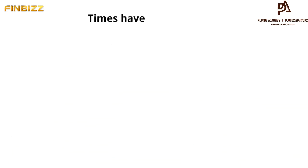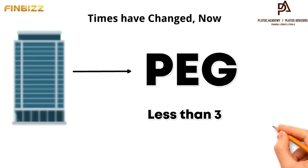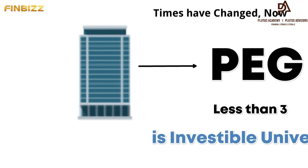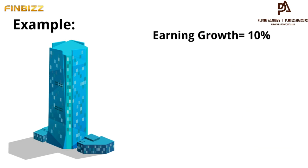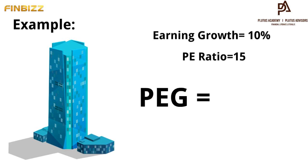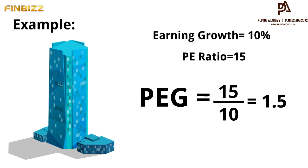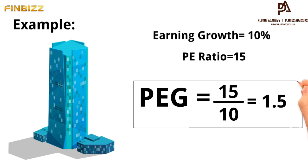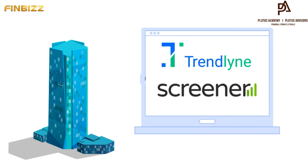But today the times have changed, and now a company having a PEG ratio less than three is considered an investable universe. For example, a company has an earnings growth of 10% and a PE ratio of 15, then as per the formula, PEG ratio would be 15 divided by 10, that is 1.5. We can see the PEG ratio of any company by using applications like Trendline and Screener, etc.